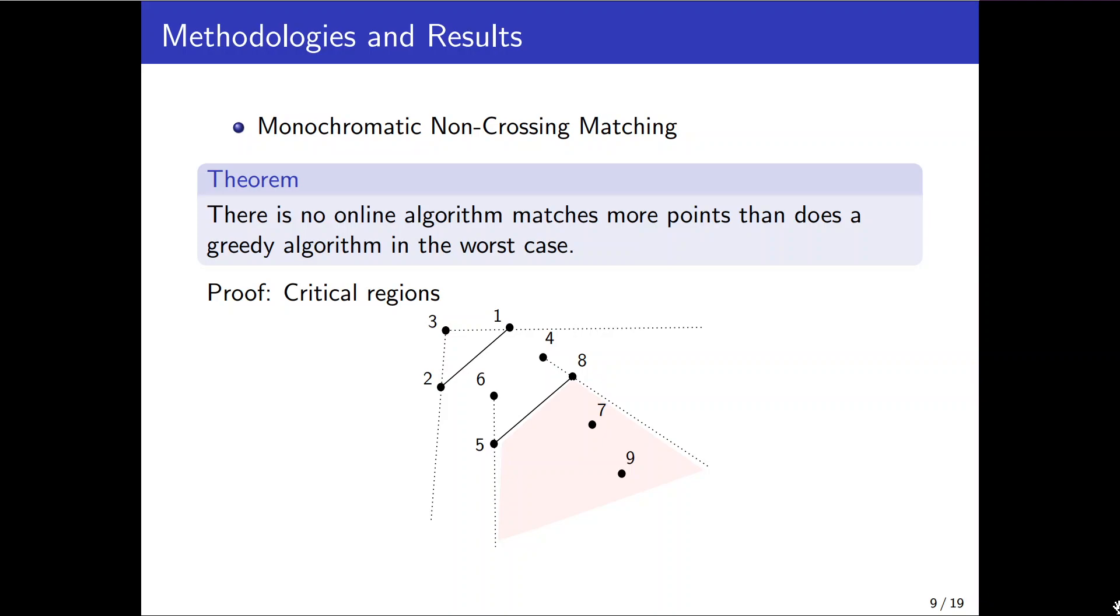And the numbers here actually indicates the index of points in the sequence. Therefore there is at least one unmatched points for each matched pairs.